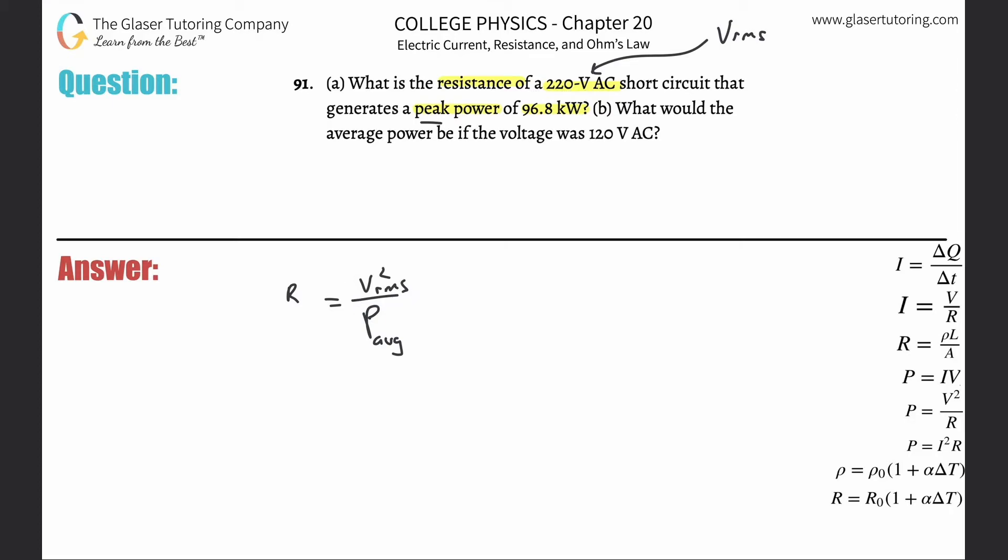I already know the root mean square voltage they told me that, but they didn't tell me the average power—they told me the peak power. So now we've got to simply figure out how to find average power from peak power. It's a very simple formula.